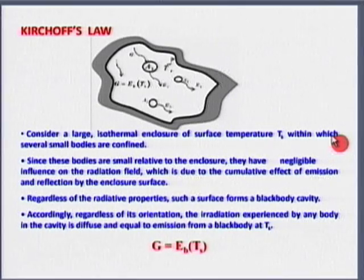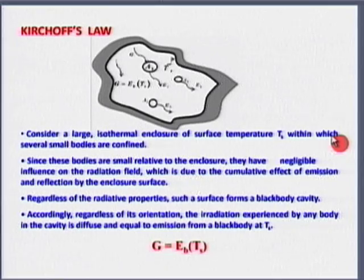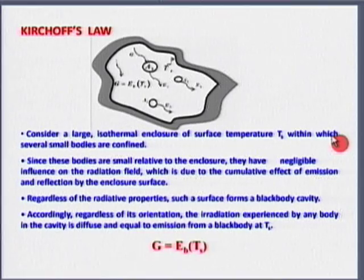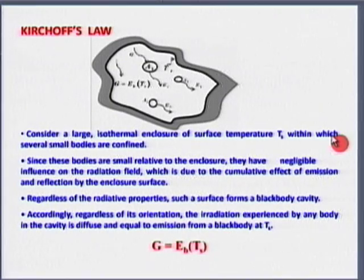Isothermal enclosure: why do we require isothermal? Because the small object placed inside would interact differently with a surface at one temperature than another. Those surfaces would interact with each other until thermal equilibrium is achieved. Isothermal is a necessary condition. 'Several small bodies confined' — small body means the surface area A of the object divided by the surface area A of the enclosure should be very very small.